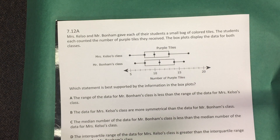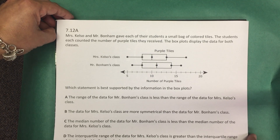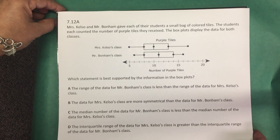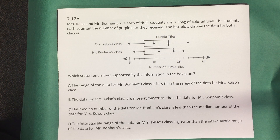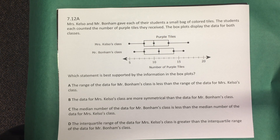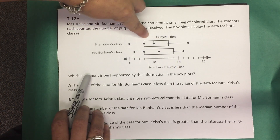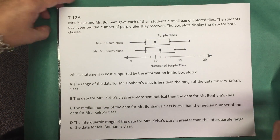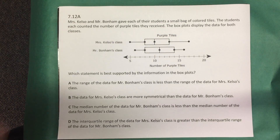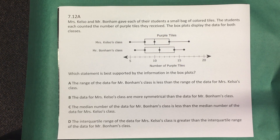Let's look at a released assessment item from the 2016 STAAR test for grade seven. Mrs. Kelso and Mr. Bonham gave each of their students a small bag of colored tiles, and the students each counted the number of purple tiles they received. The box plots display the data for both classes — the top box plot is Mrs. Kelso's class and the bottom is Mr. Bonham's class. Which statement is best supported by the information in the box plots? Let's read each answer choice and analyze the information in the graph.